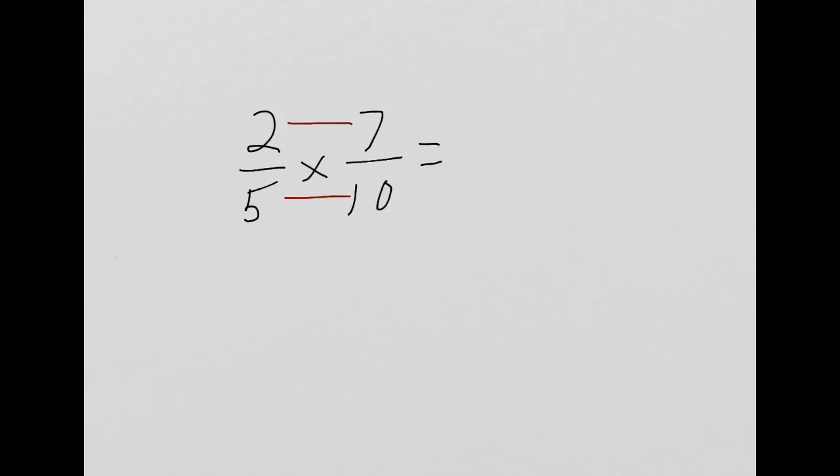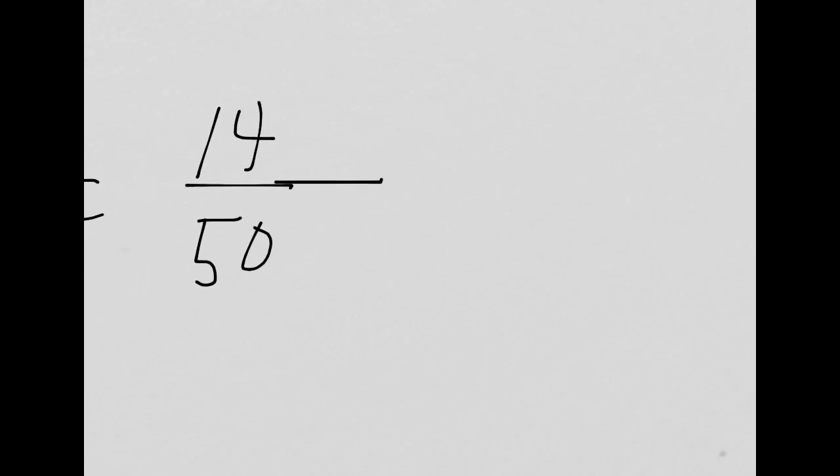2/5 times 7/10 becomes 14/50. Simplification or reducing is basically accomplished by recognizing common factors with the numerator and the denominator and then dividing both by that factor. I know that 14 and 50 are even numbers and that means that 2 is a factor of them. 14 divided by 2 is 7. 50 divided by 2 is 25.